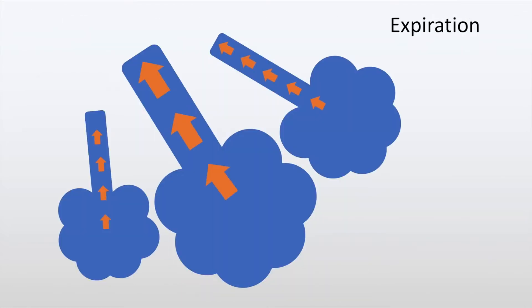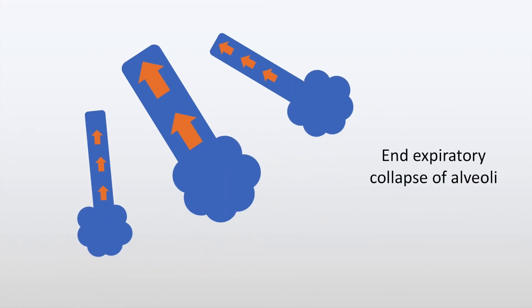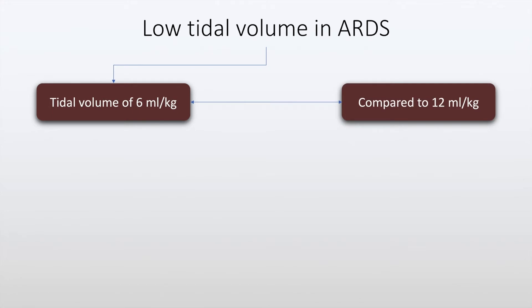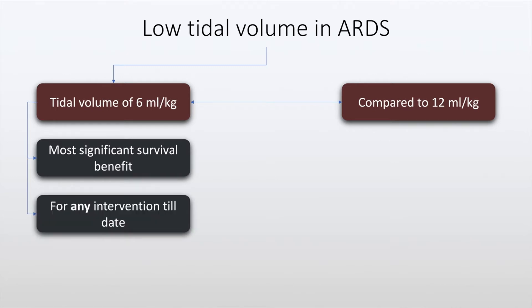During expiration, there is an end expiratory alveolar collapse. The rationale of low tidal volume ventilation is to prevent this in conjunction with a positive end expiratory pressure of about 5 mmHg. Low tidal volume of 6 mL/kg when compared to a tidal volume of 12 mL/kg was found to have survival benefit, and this was most significant amongst any intervention to date. Therefore, one of the most important messages in this presentation is the use of low tidal volume as a ventilatory strategy in Acute Respiratory Distress Syndrome.